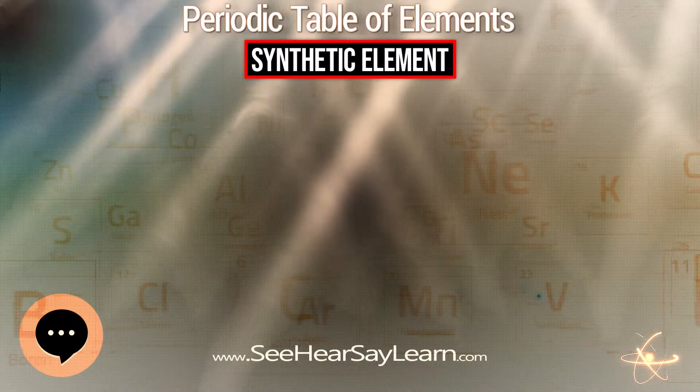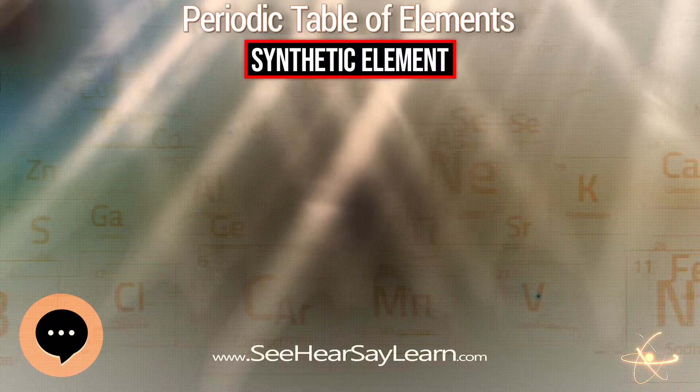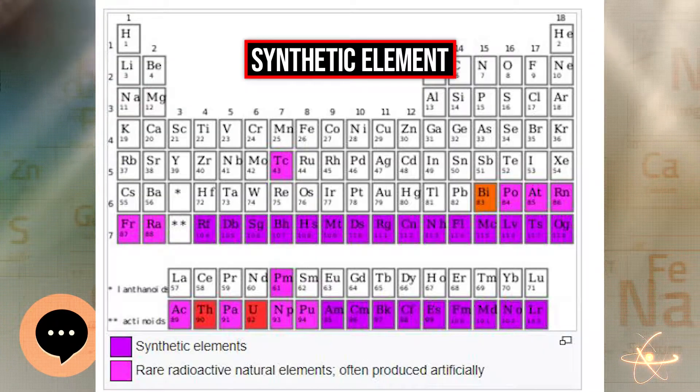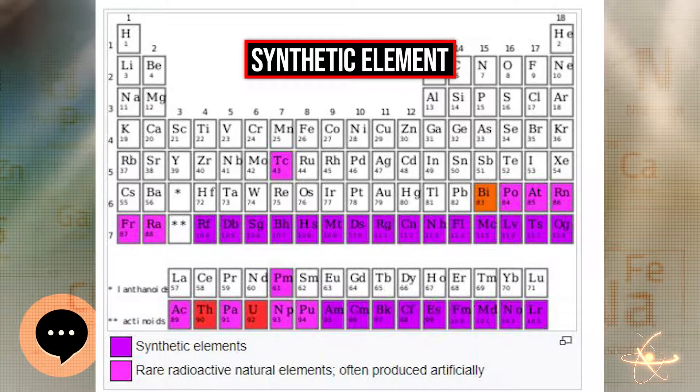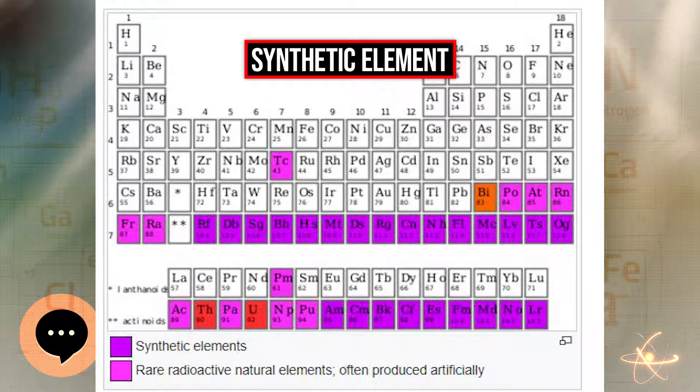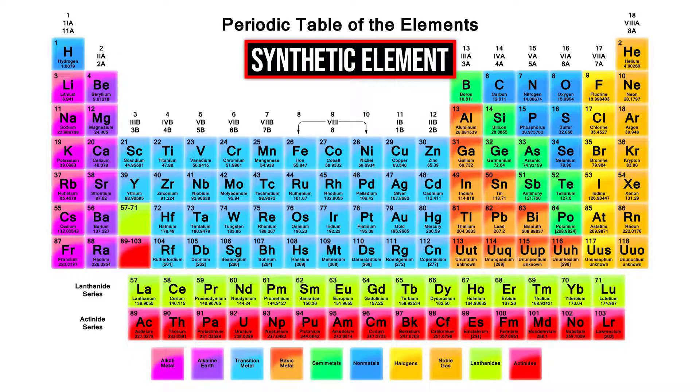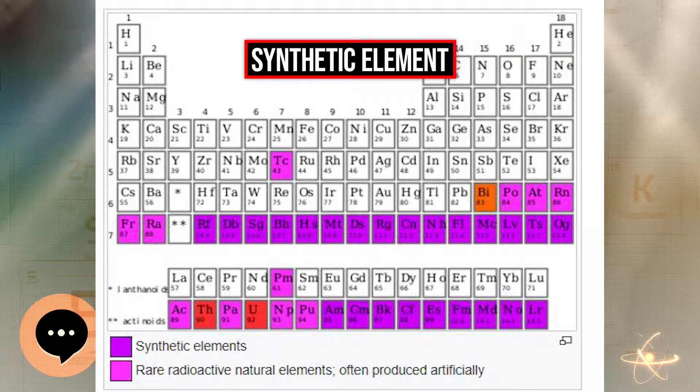A synthetic element in chemistry is a chemical element that does not occur naturally on Earth and can only be created artificially. So far, 24 synthetic elements have been created, all are unstable, decaying with half-lives ranging from 15.6 million years to a few hundred microseconds.